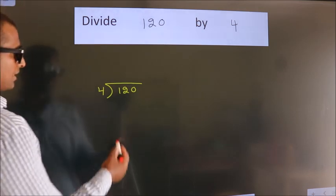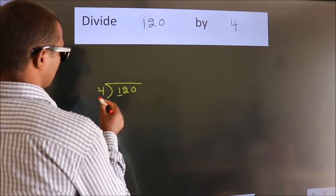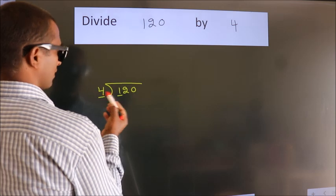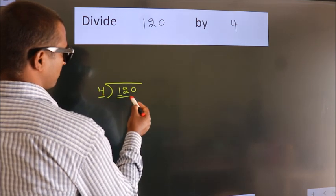Next. Here we have 1. Here 4. 1 is smaller than 4, so we should take 2 numbers: 12.